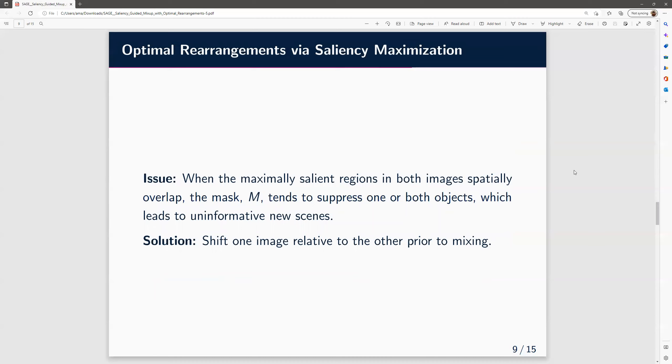One issue is that when the maximally salient regions in both images spatially overlap, then the mask M tends to suppress one or both objects, which leads to uninformative new scenes. And the proposed solution is to shift one image relative to the other, prior to mixing.